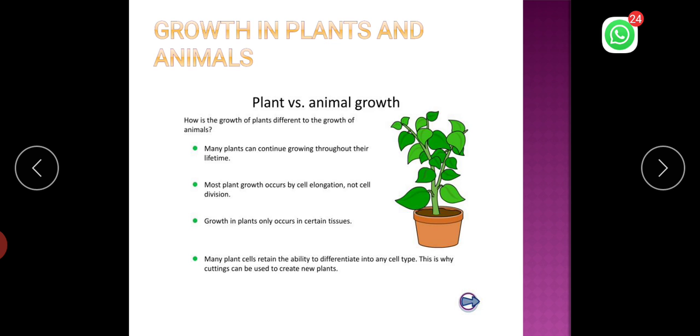These are specialized growth tissues. You will learn about them in class 9. Many plant cells retain their ability to differentiate into any cell type. That is why we can grow plants by cuttings also. But this is not possible in animals.